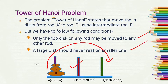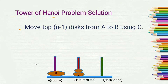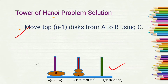That's why we need intermediate rod B. To solve Tower of Hanoi, the first step is: move n minus one disks from A to B using rod C. That means you have to move the top n minus one disks from rod A to rod B.